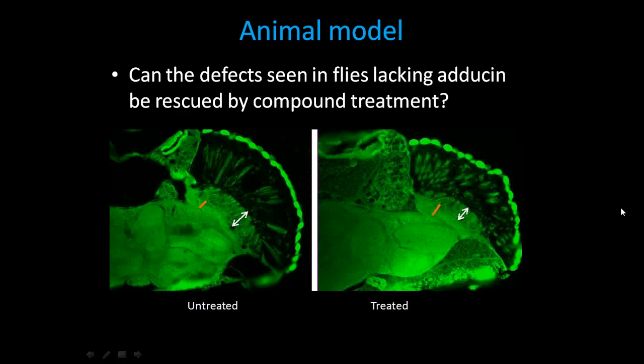We've continued to use the animal model I mentioned. In the flies, we've actually started treating the flies lacking aducin with the compound we used to rescue the phenotype in the dish. Although these studies are just at their very beginning stages, when you compare the untreated mutant flies to the treated flies, the abnormalities of parts of the brain — the lamina of the fly brain — can in fact be restored to near normal by this treatment. The next stage is to see what effect this has on the flies' ability to walk.